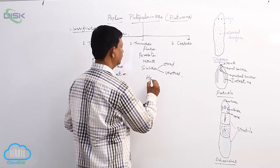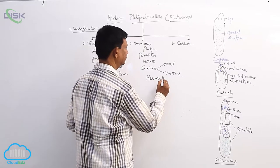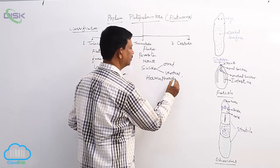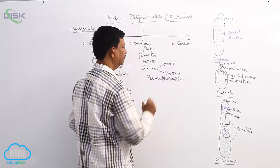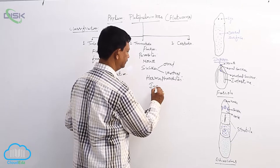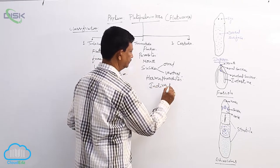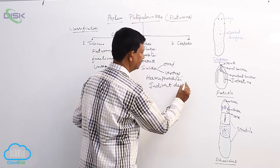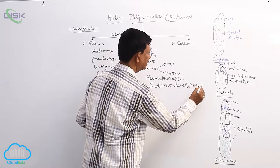Hence it is known as the incomplete alimentary canal present in this phyla. They are also hermaphroditic animals. Both male and female reproductive organs are present in the same individual and development is indirect.